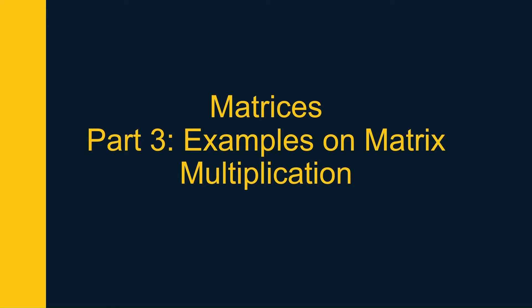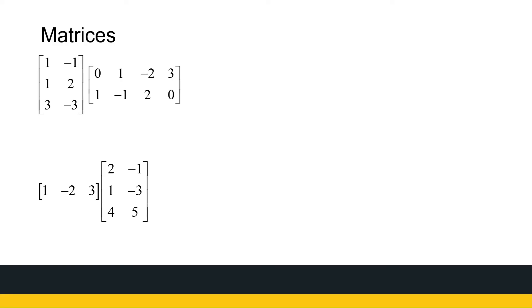In part two on matrices, we looked at operations on matrices: addition, scalar multiplication, and we started with the product of two matrices. We defined how to find the product of two matrices, when we can find it, and now we're going to look at some examples and some properties of matrix multiplication.